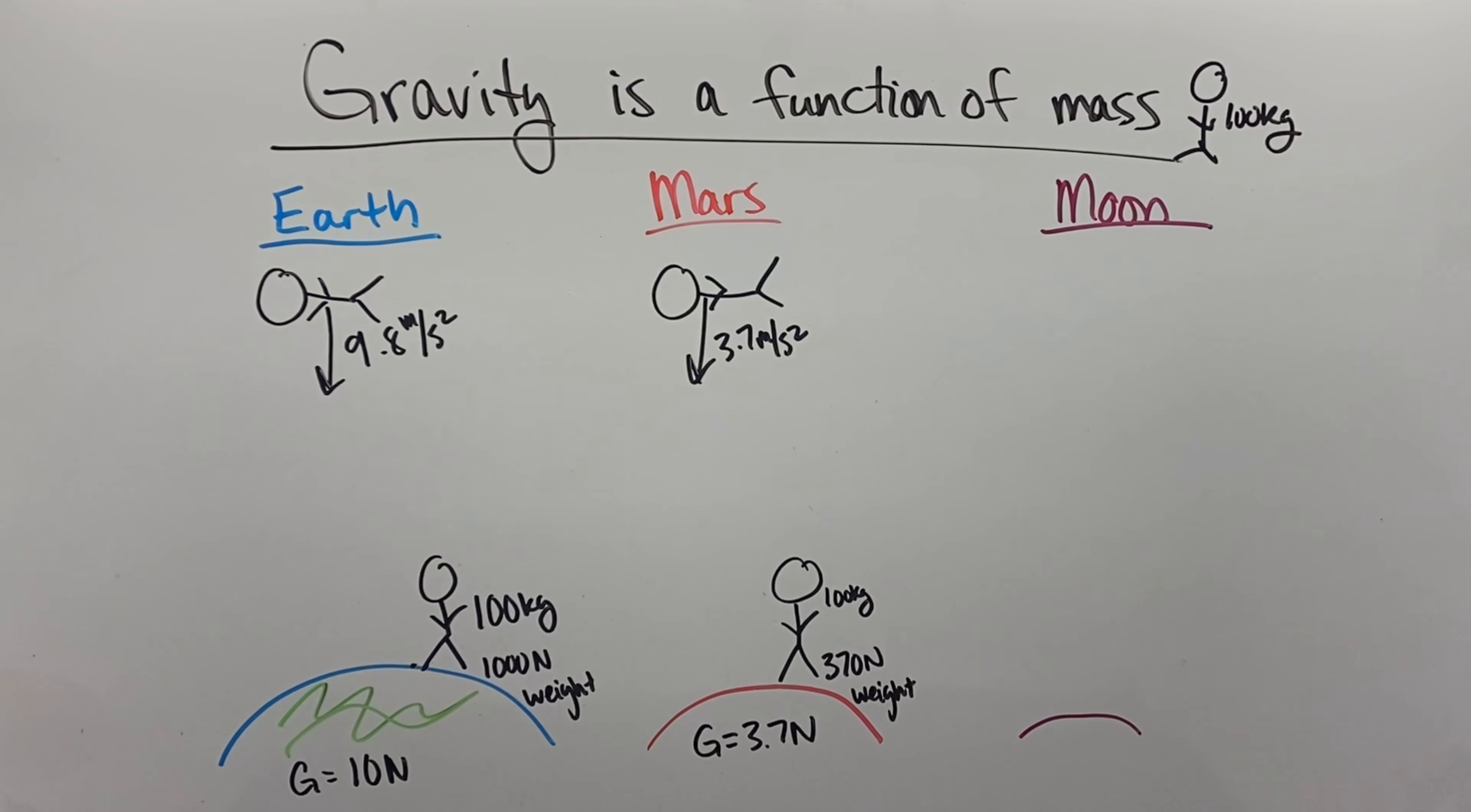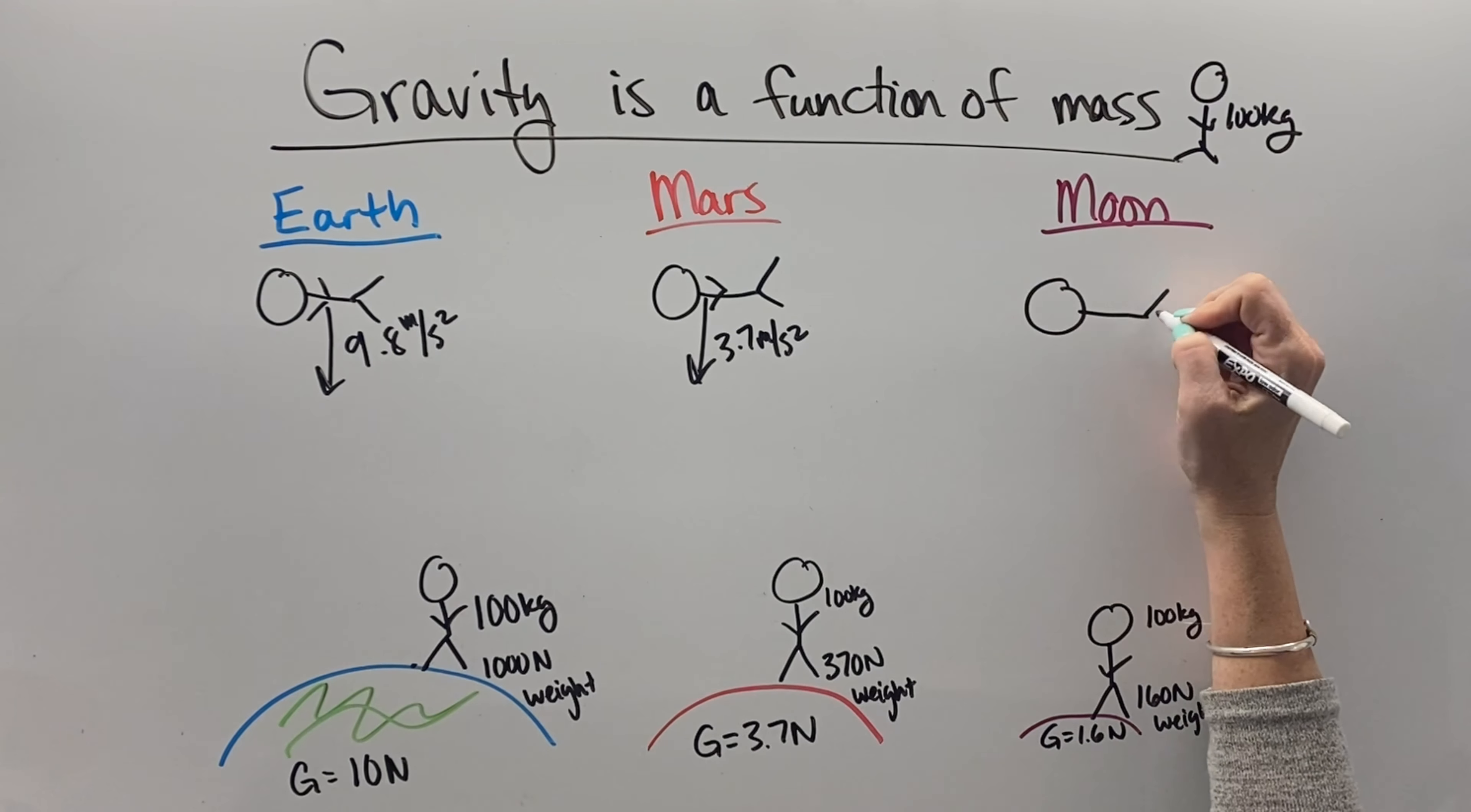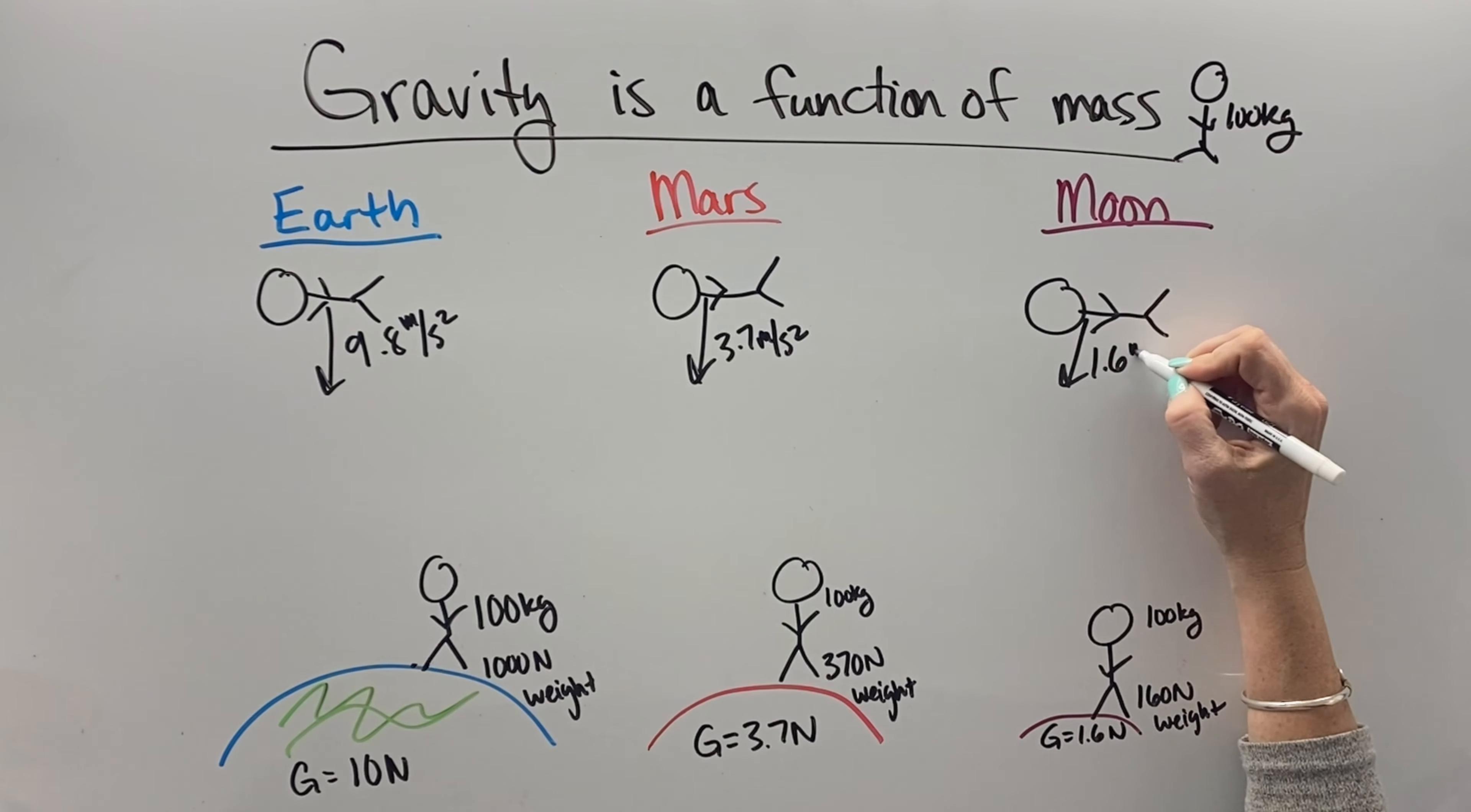On the moon, which is much smaller even than Mars, about half the size of Mars, the gravity is 1.6 newtons of force. So if a person goes to the moon, still 100 kilograms, still the same person, but they would weigh 160 newtons. And if they were to fall, they would accelerate at 1.6 meters per second squared.